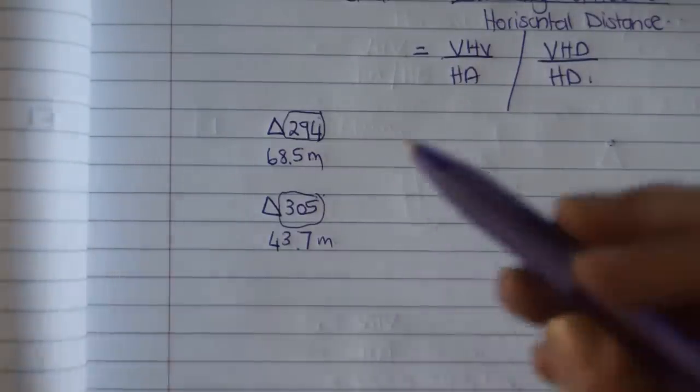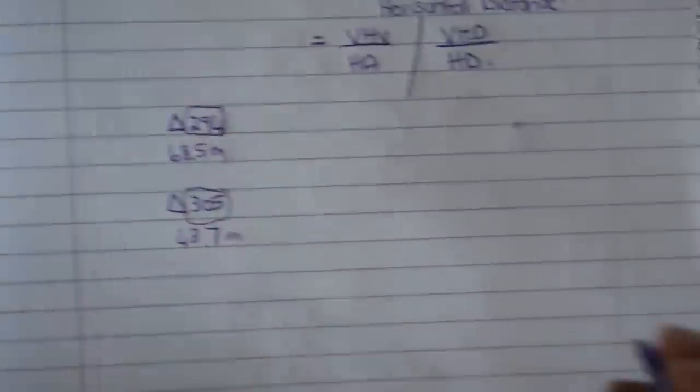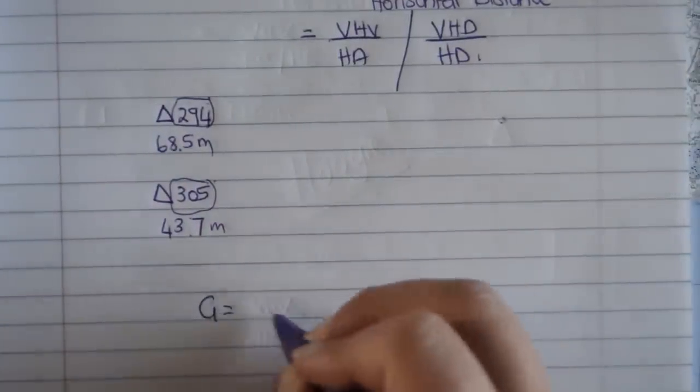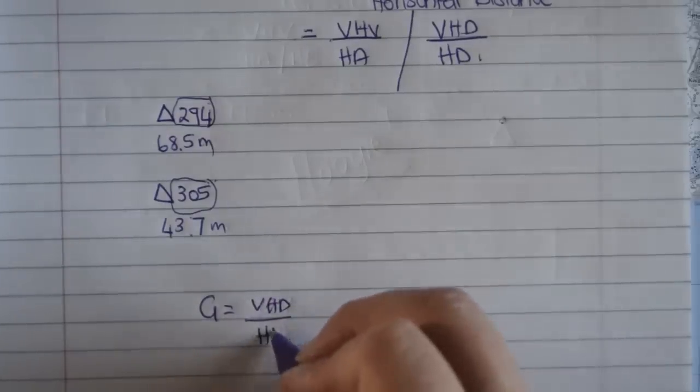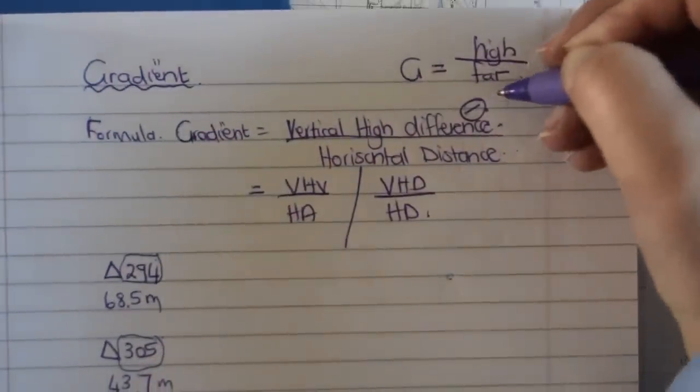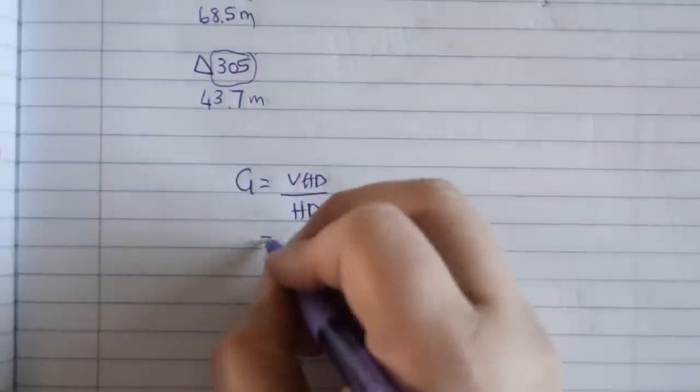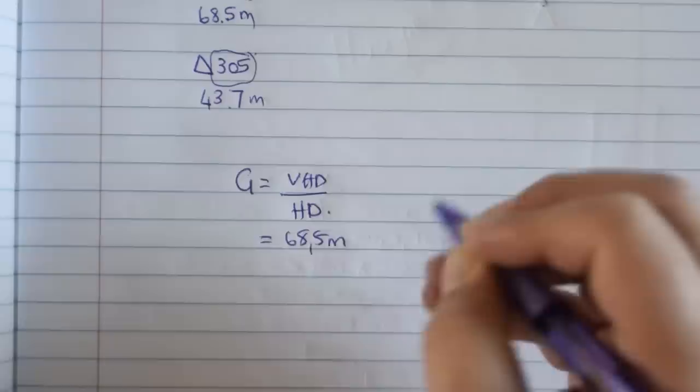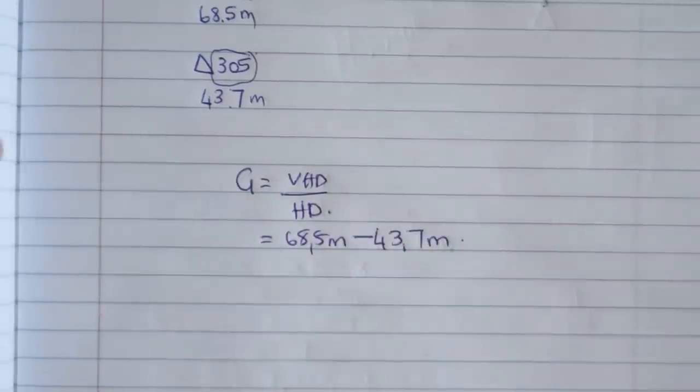So now you can go back to your formula and you can start to do it. So you will say gradient is equal to your vertical height difference divided by your horizontal distance. And now difference means minus. You will need to minus. So what are you going to do? You're going to say, I've got 68.5 meters and I'm subtracting the smaller one.